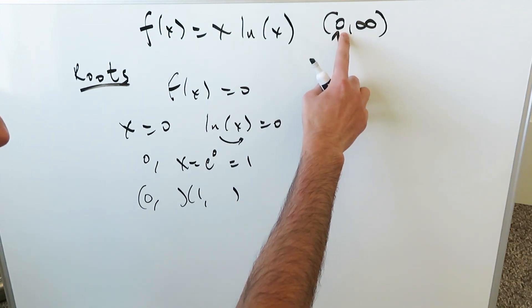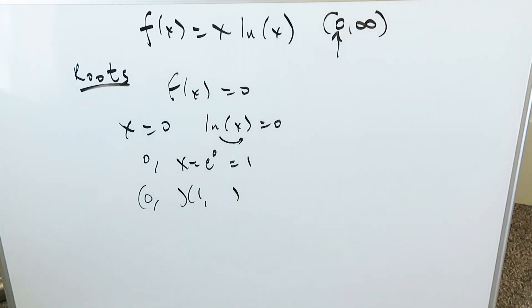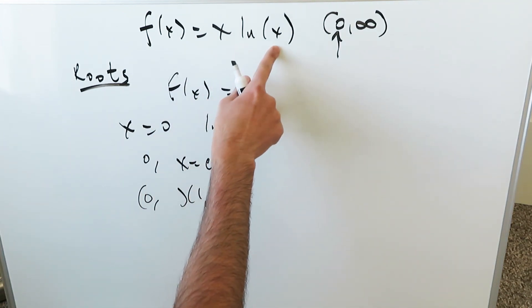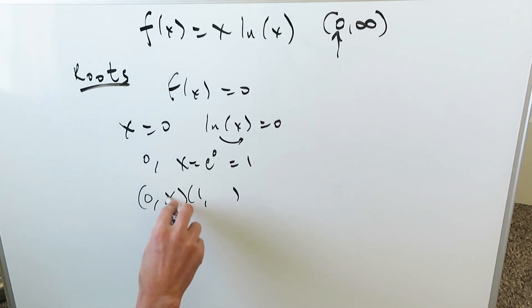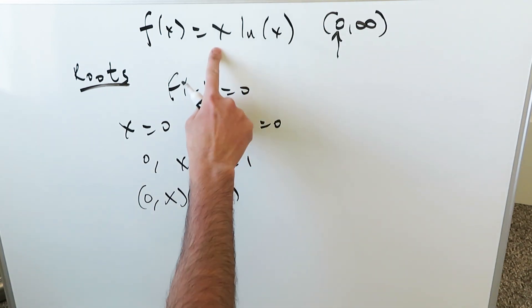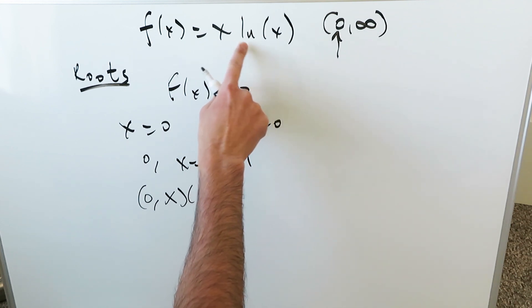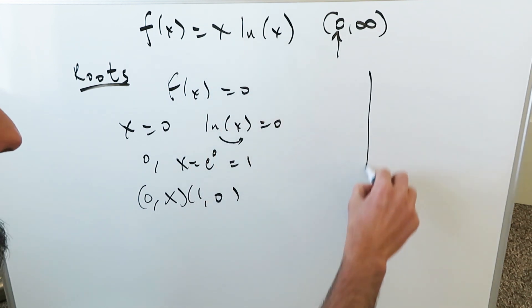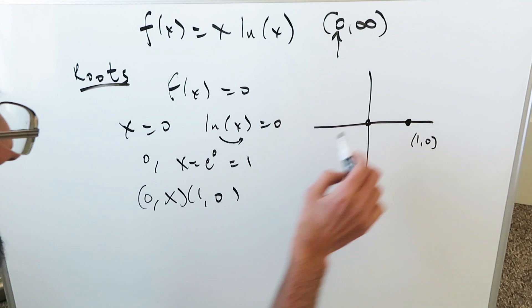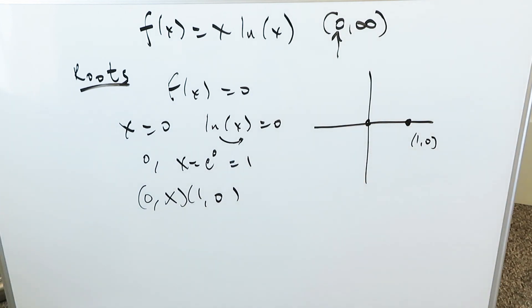There's a little issue we have to examine and verify. When I put zero into the original function, I get zero times natural log of zero. Natural log of zero is technically not defined, so we leave that out. When I put one in, I get one times natural log of one, which is zero — that root is confirmed. So one root is at (1, 0), and the other candidate at the origin needs clarification.